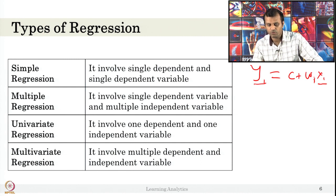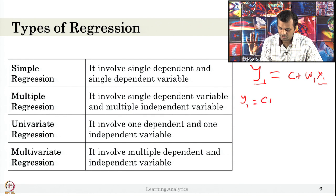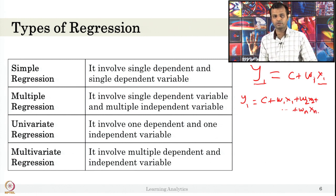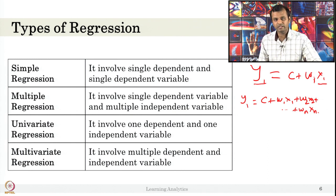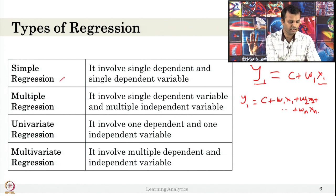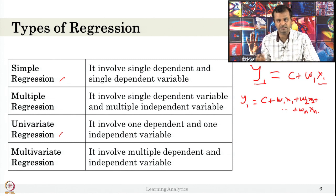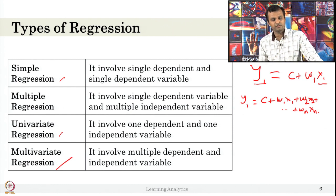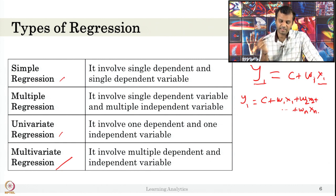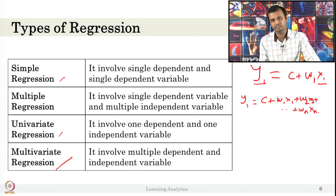In multiple regression, there is one dependent variable y, and the formula is: y = intercept + w1·x1 + w2·x2 + ... up to n variables. The number of independent variables can be many. Univariate regression and simple regression are the same — both have a single independent variable. Multivariate regression involves multiple dependent and multiple independent variables — you might predict y1, y2, y3 simultaneously. We will focus on simple regression and multiple regression here.